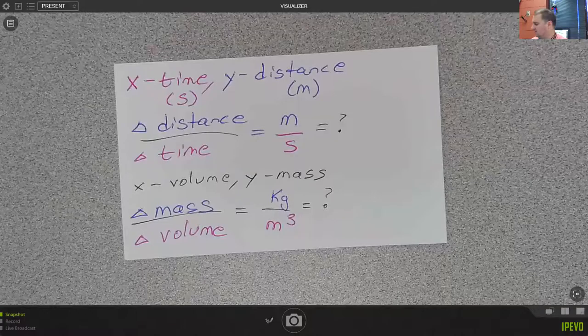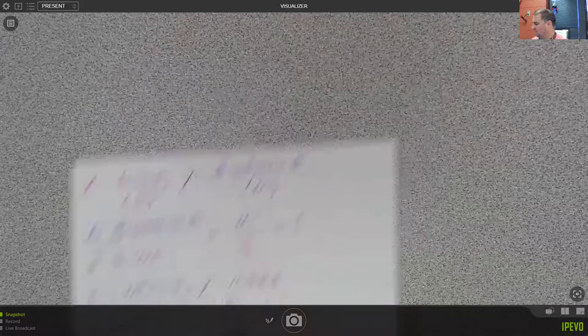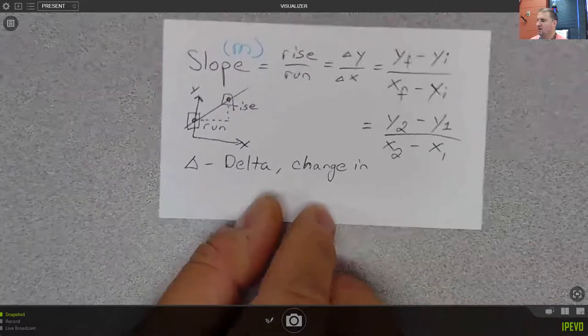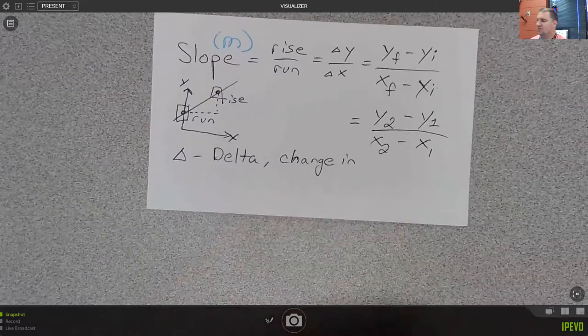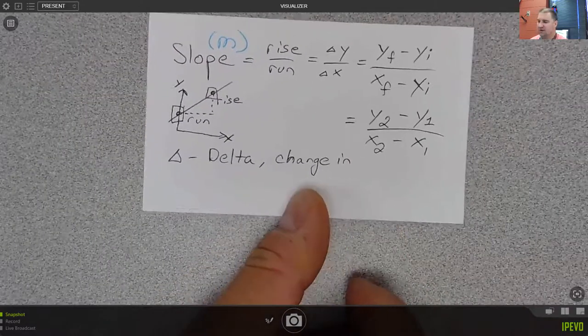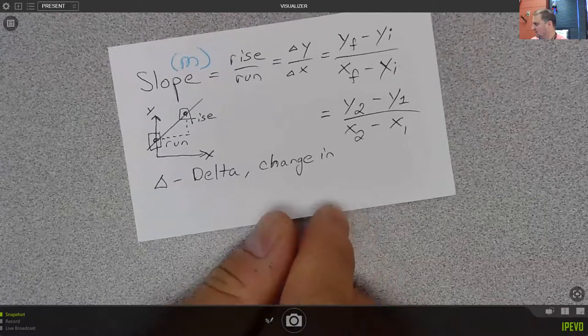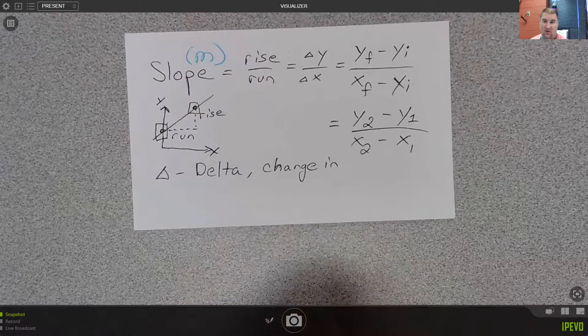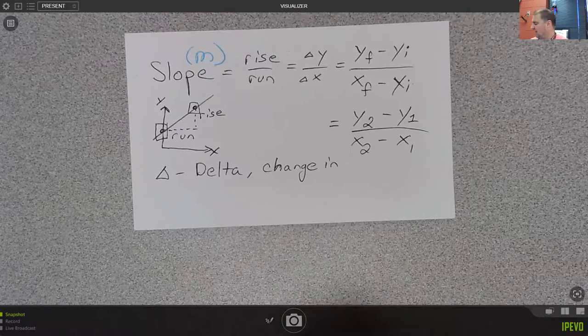So I'd like to bring your attention back to one of the index cards we made the other day that you should have in your notes, because you might recall that we had this definition for slope, right? That slope was rise over run. You could think of it as delta y over delta x, the change in y over the change in x.